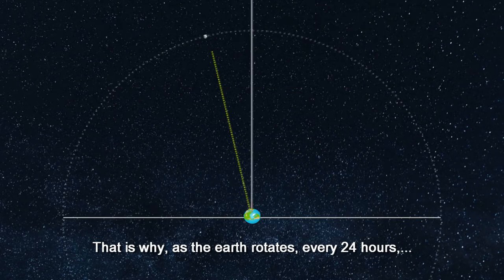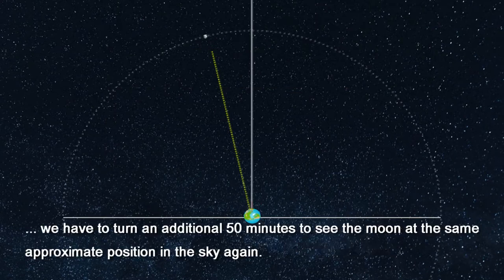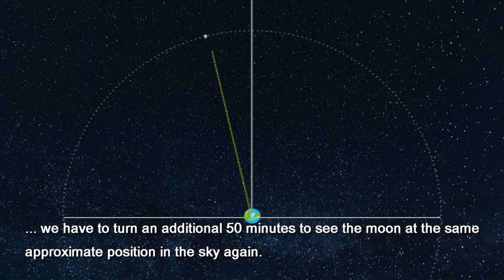That is why, as the Earth rotates every 24 hours, we have to turn an additional 50 minutes to see the Moon at approximately the same position in the sky again.